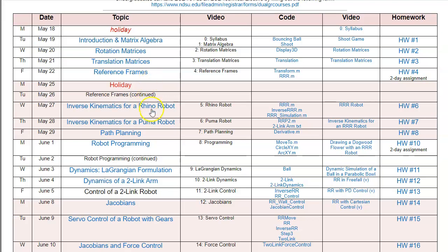We'll then look at specific robots: the Rhino robot and a PUMA robot. Given the joint angles, I can tell you what the tip position is — that's forward kinematics. The inverse kinematics is going backwards: given the tip position, what are the joint angles?